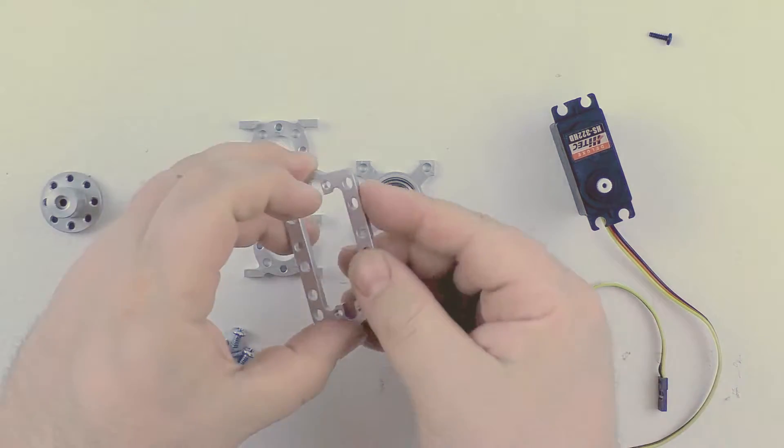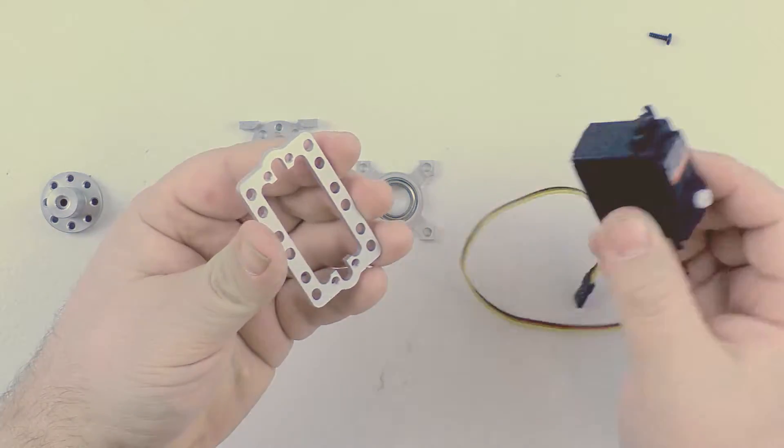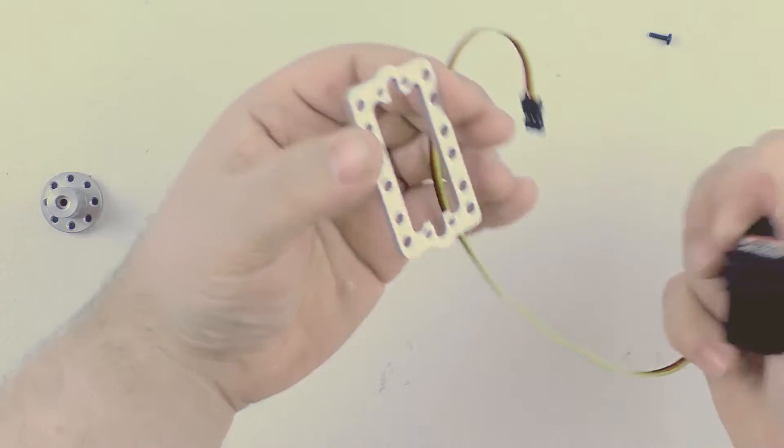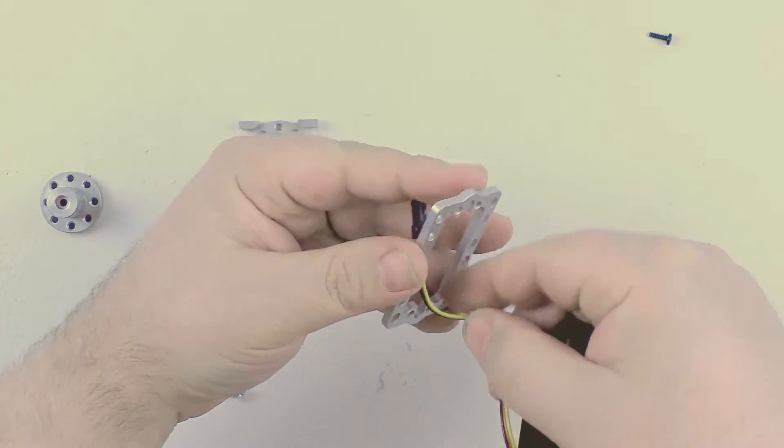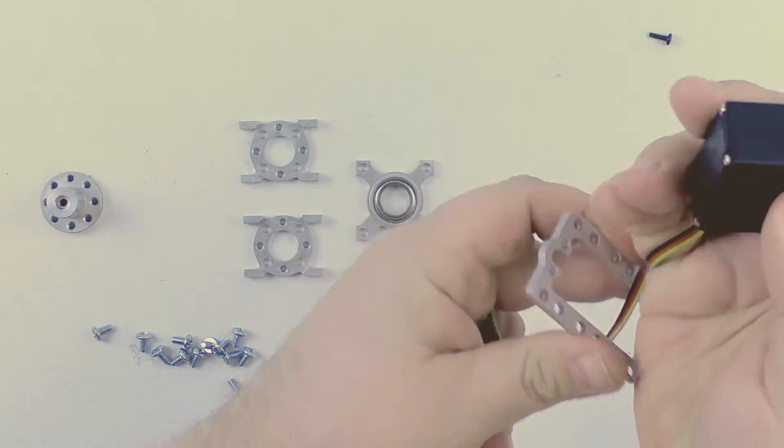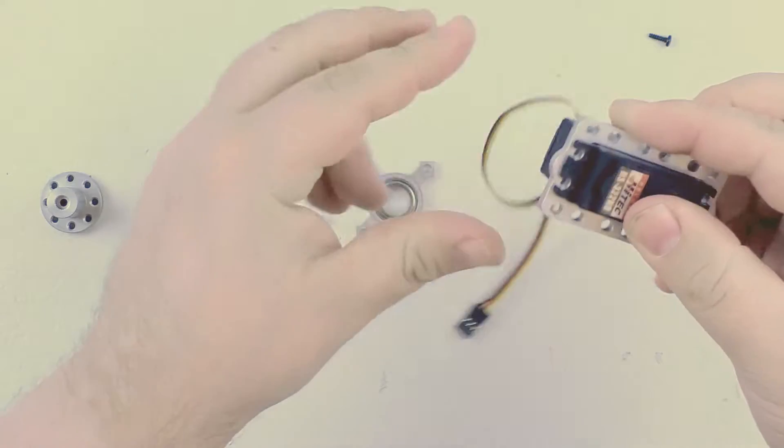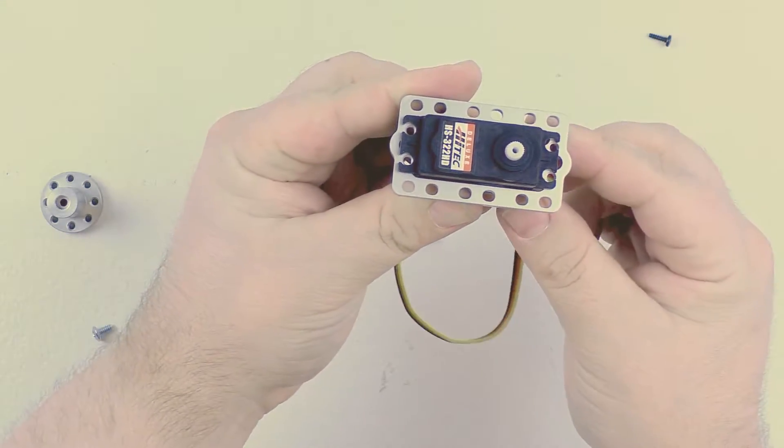The next thing we are going to want to do is install the main part of the servo block here. In the case of your standard size servo, it doesn't really matter which way it goes. You are going to want to thread the power cord for your servo through the center, and seat the servo into the main block like that.